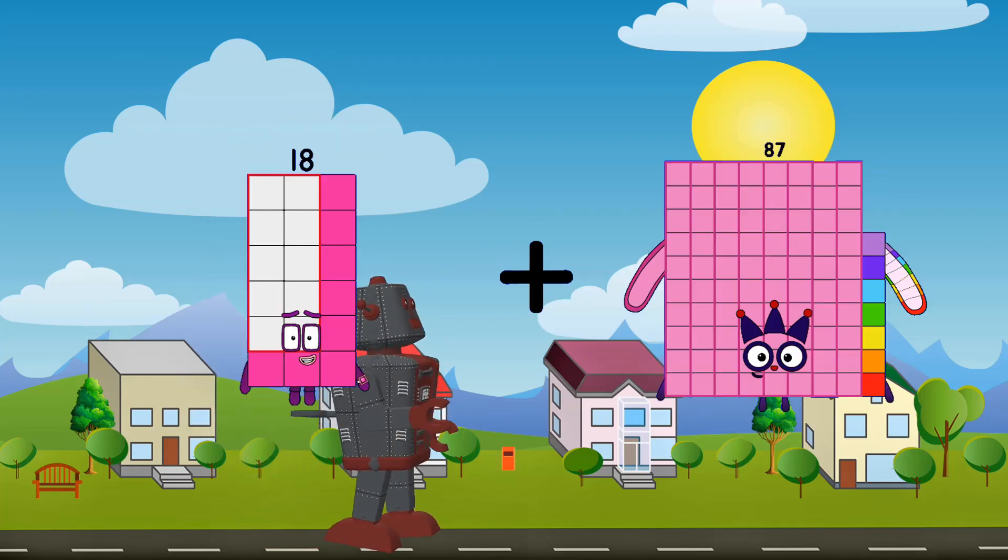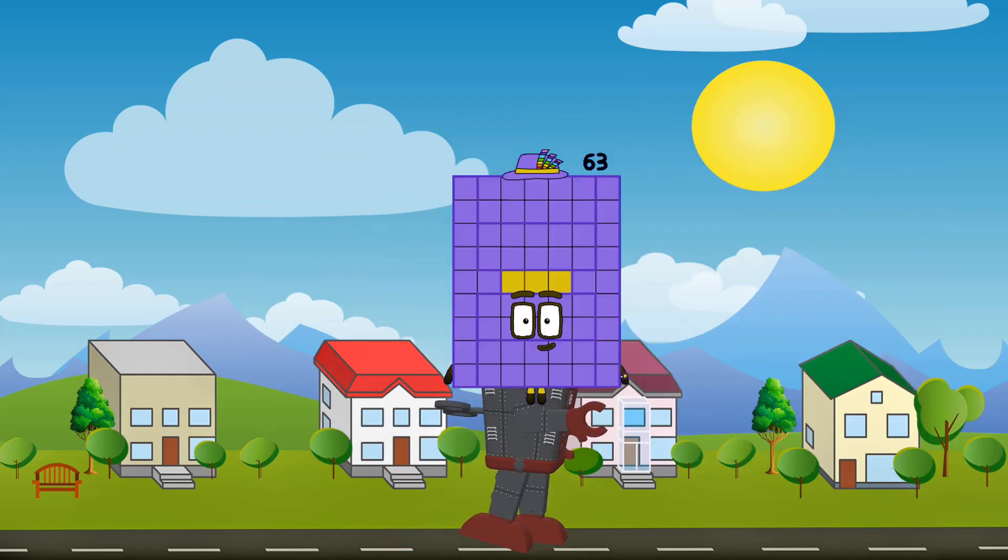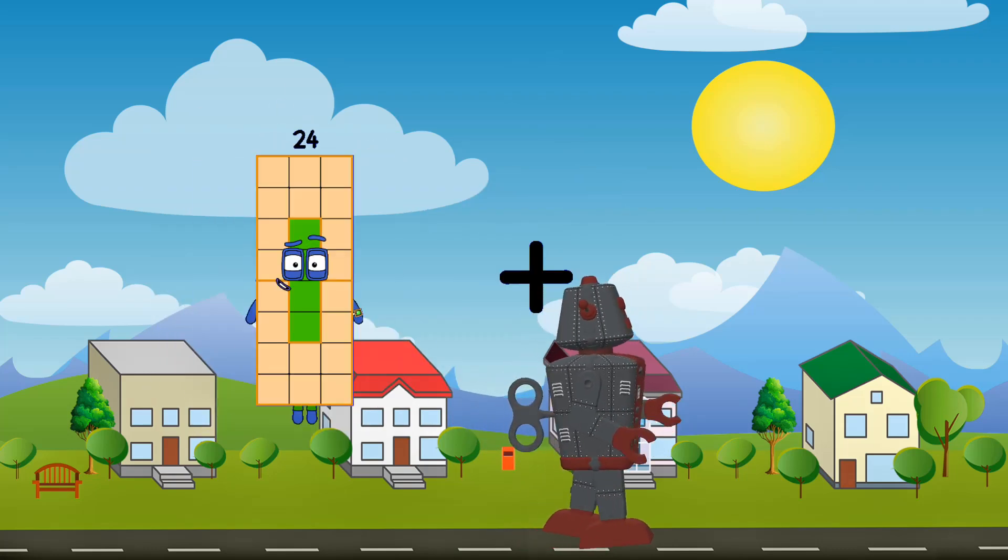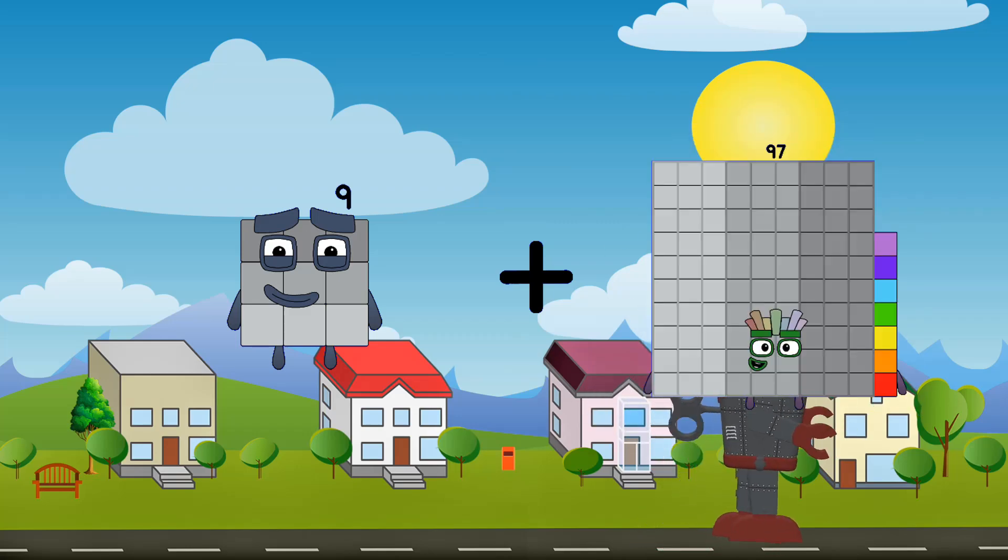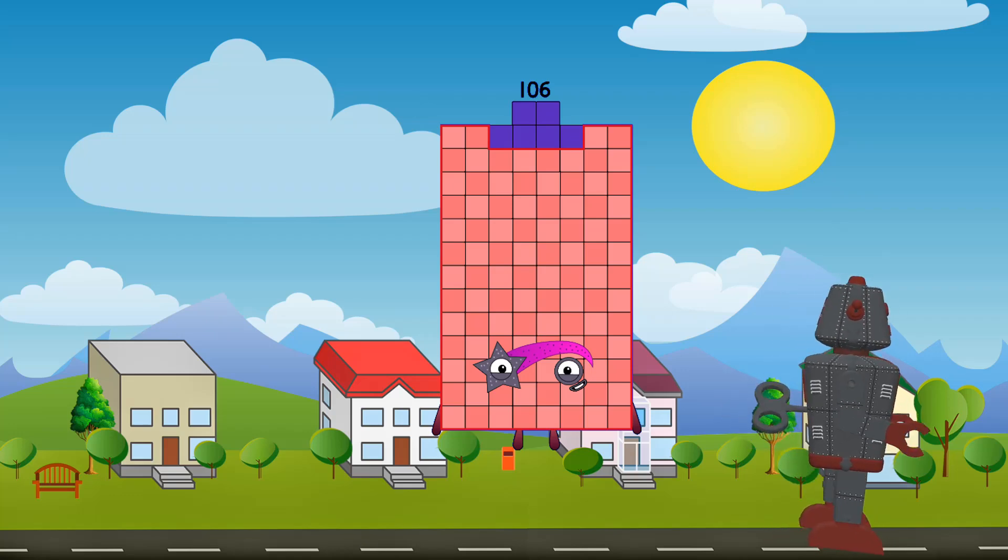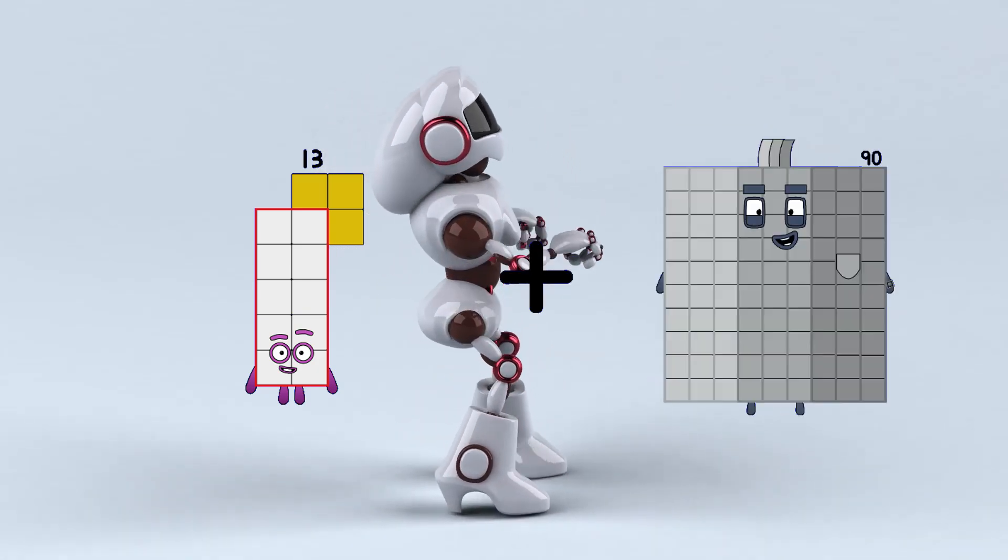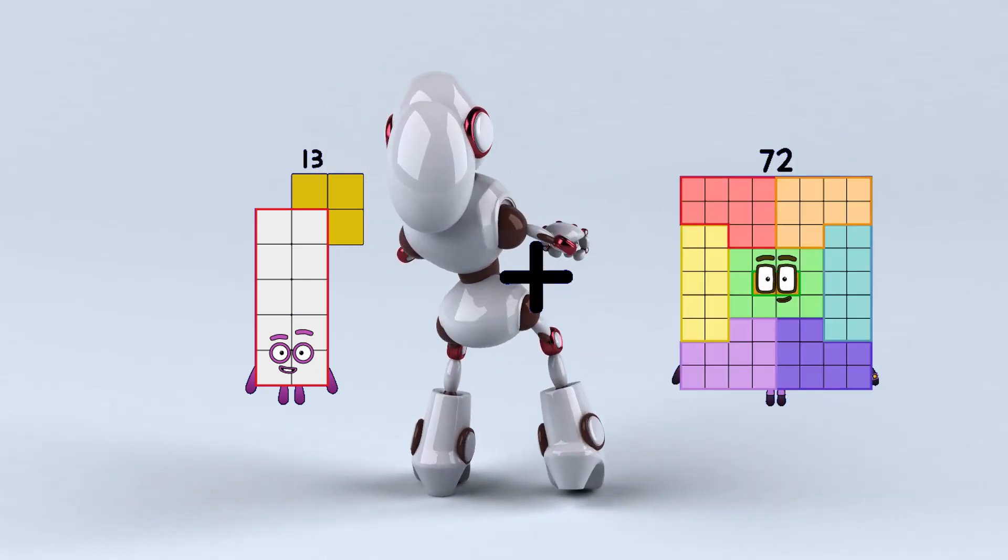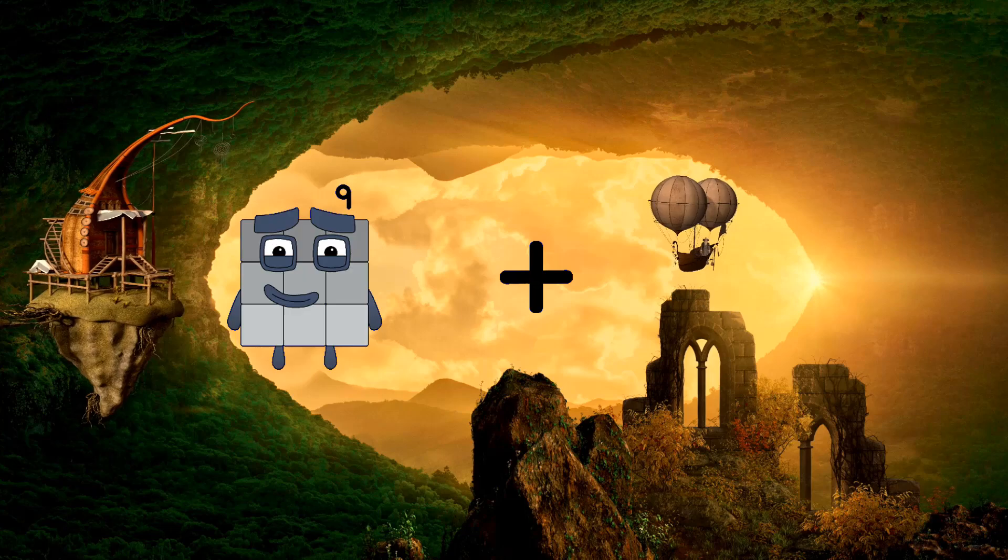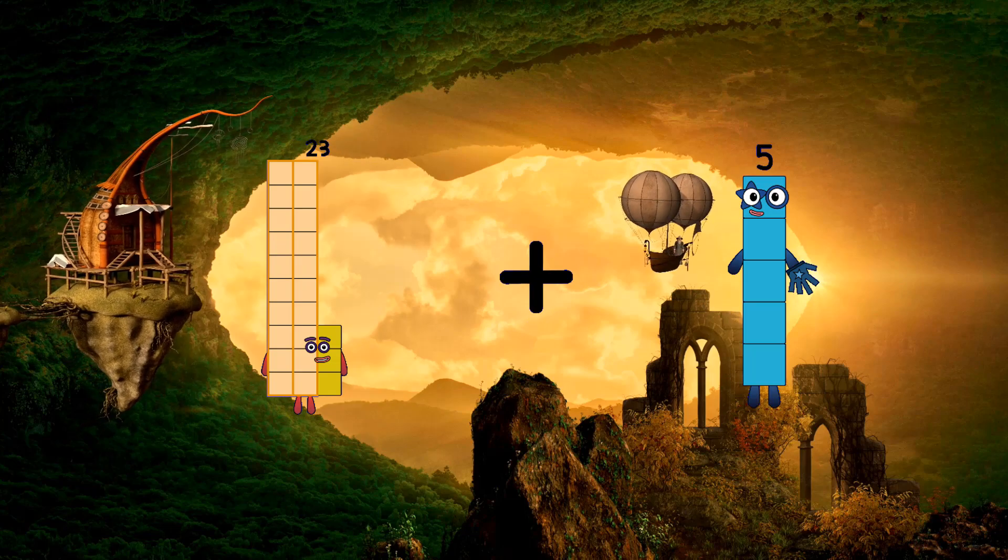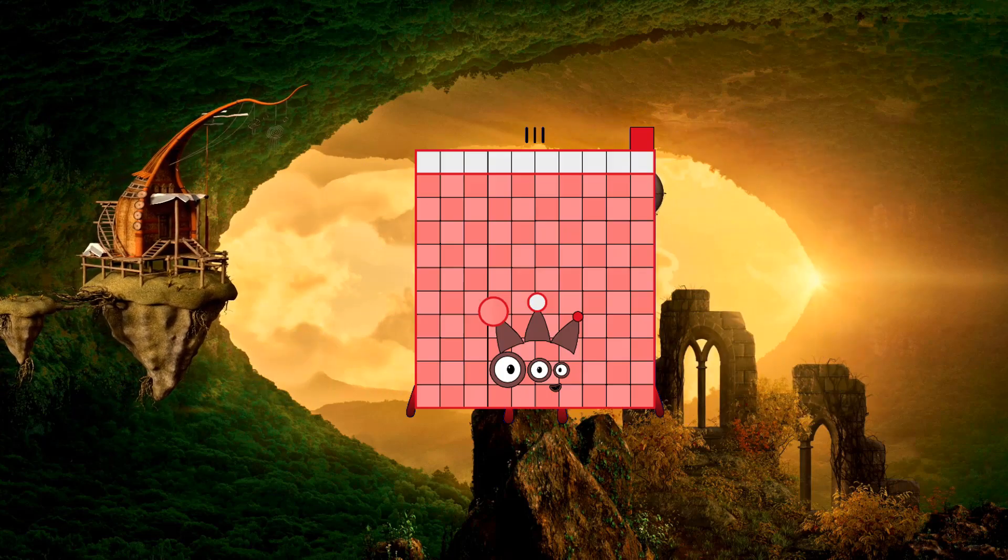18 plus 45 equals 63. 9 plus 97 equals 106. 13 plus 69 equals 82. 23 plus 88 equals 111.